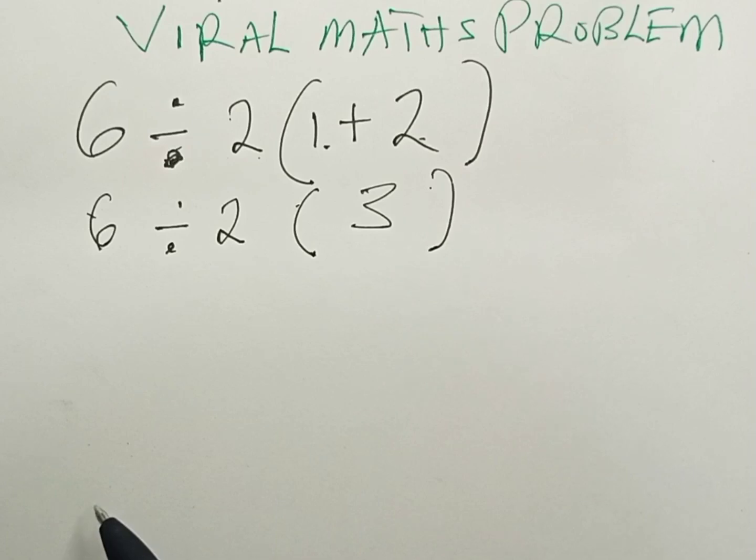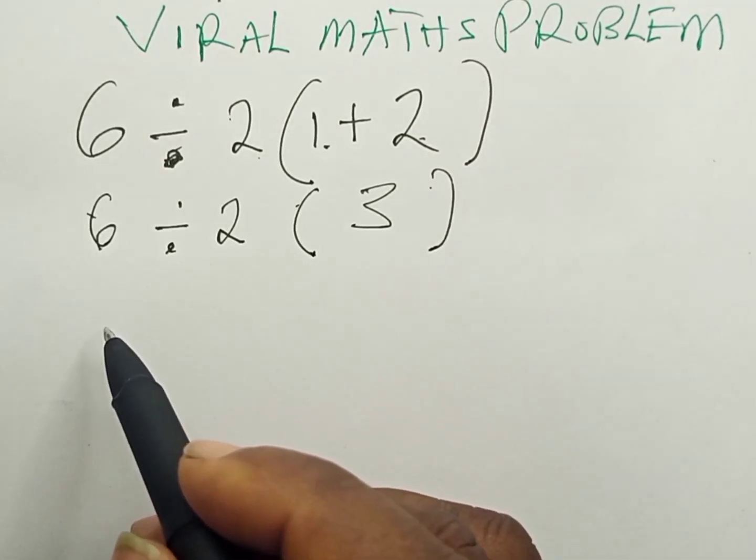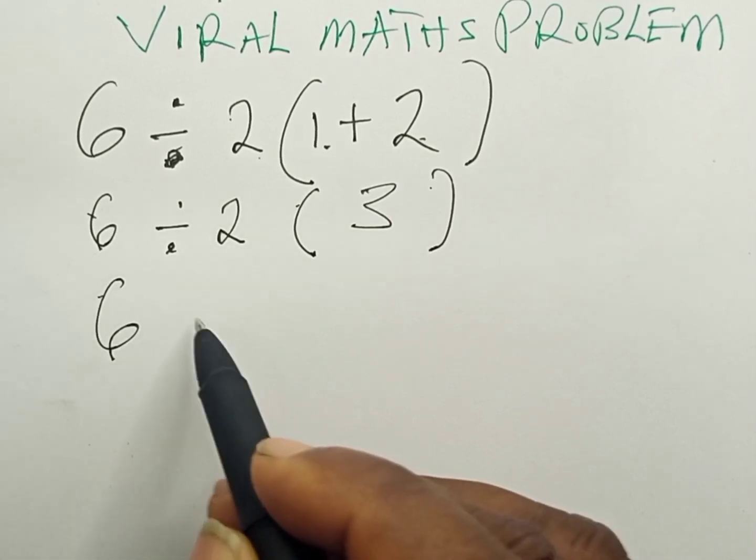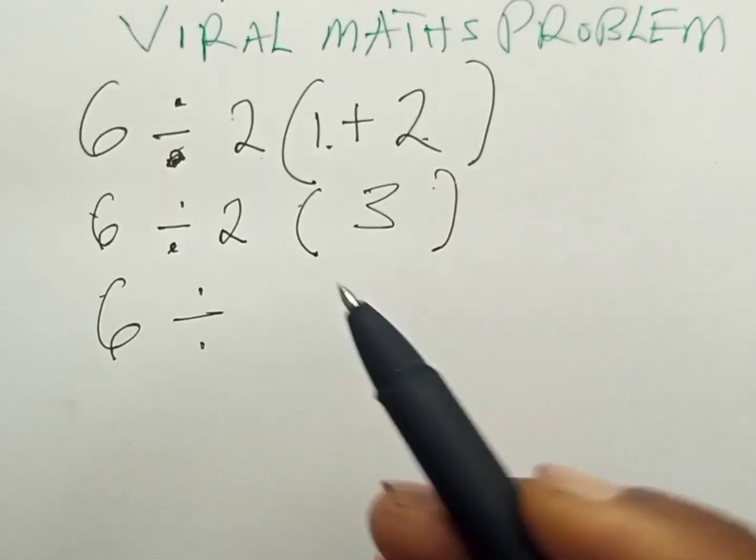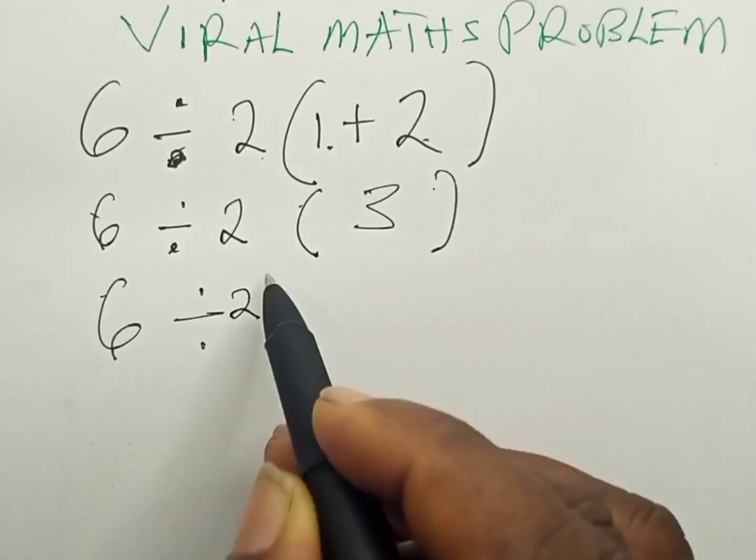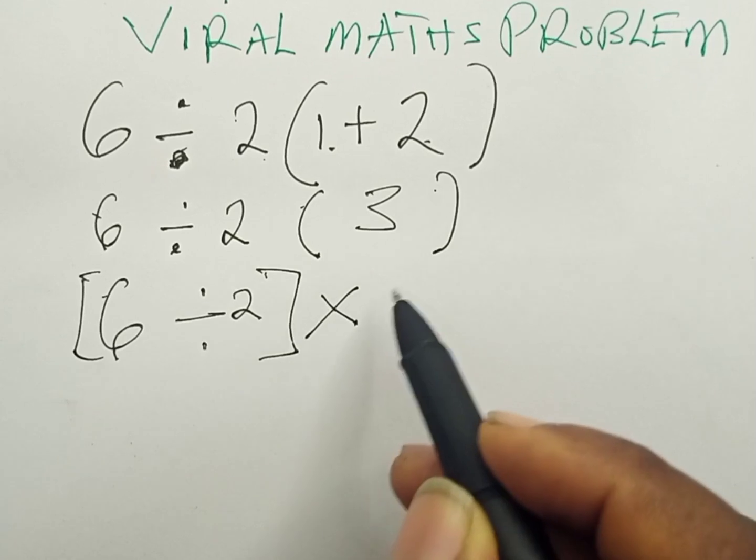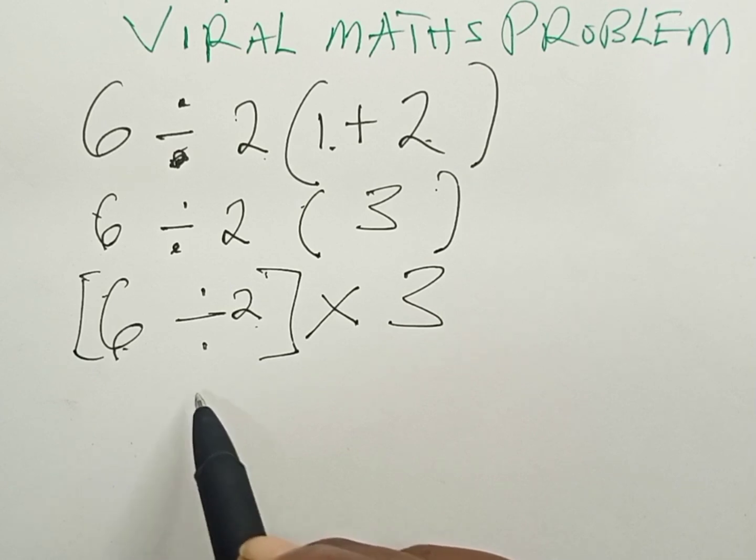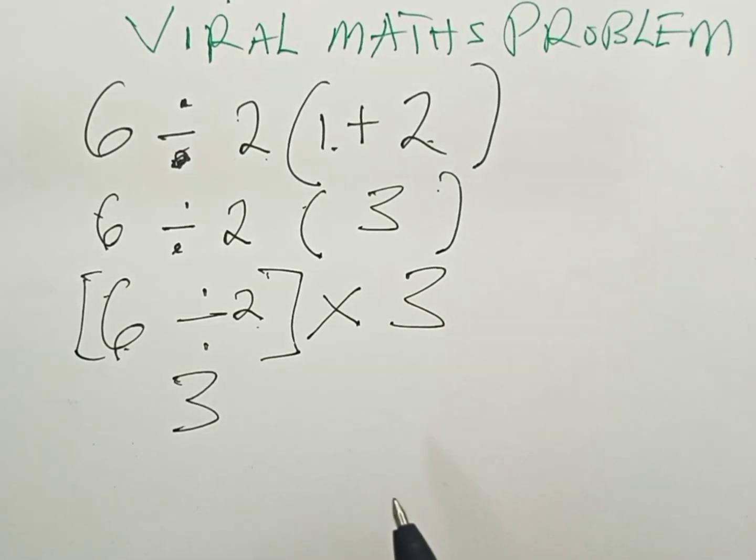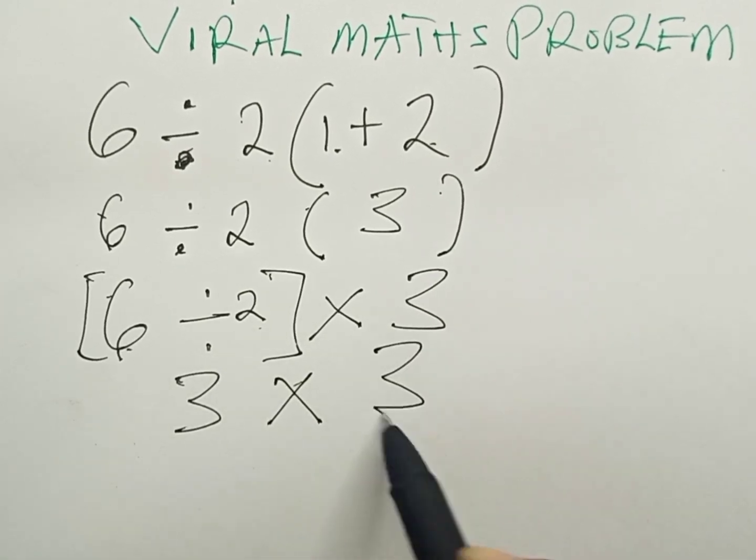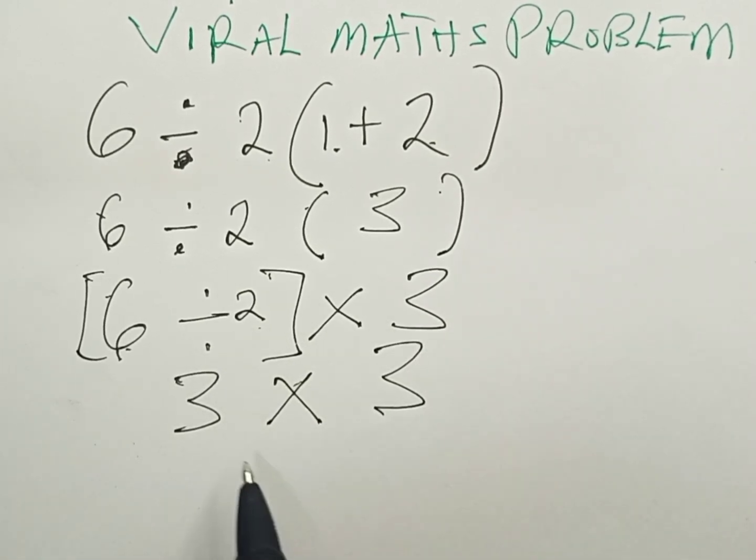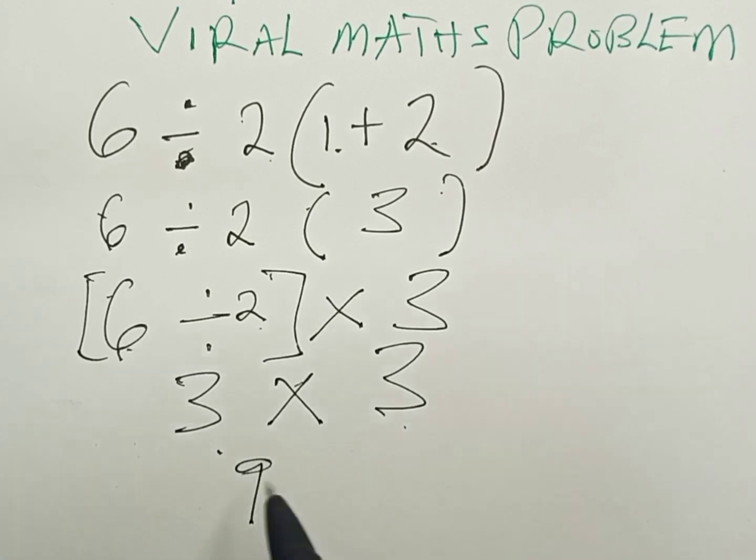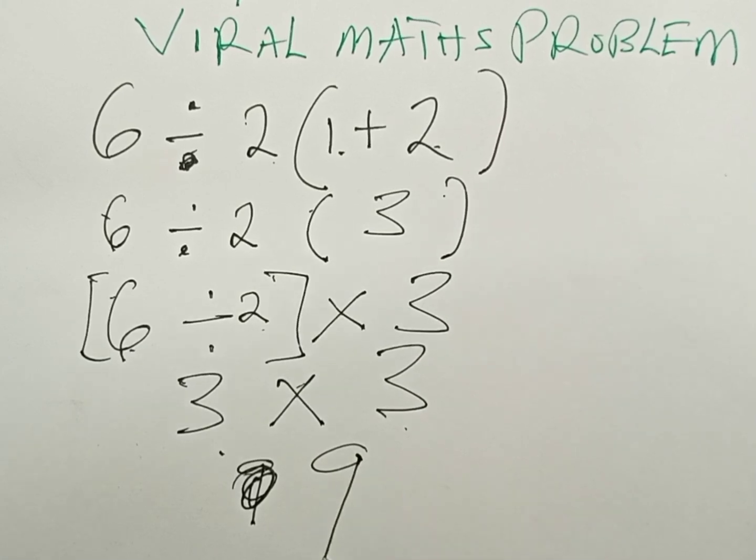And we can write this as 6 divided by 2, then multiplied by 3. So 6 divided by 2 is 3, times 3, so 3 times 3 equals 9.